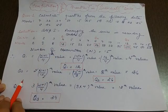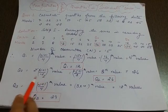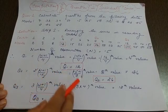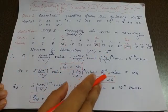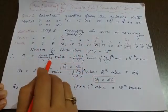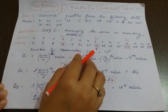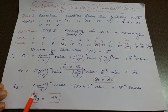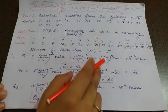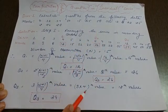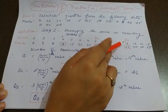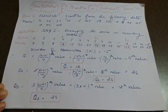For the second quartile Q2, we use the formula 2(N+1)/4, or equivalently the median formula (N+1)/2. Substituting N=15 gives the 8th value. The marks at the 8th position in the arranged series is 26, so Q2 equals 26. For Q3, we use 3(N+1)/4. Since (N+1)/4 equals 4, we multiply 4 by 3 to get the 12th value. The 12th value in the series is 39, so Q3 equals 39.